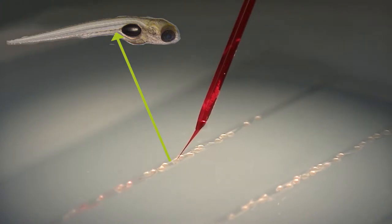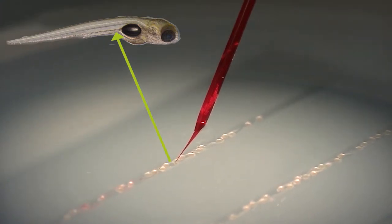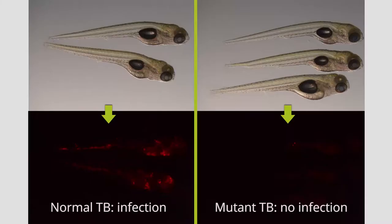The ones that make the fish ill are brightly fluorescent red, and the ones that are unable to make the fish ill show no fluorescence. In that way you can determine what genes are important for the virulence.